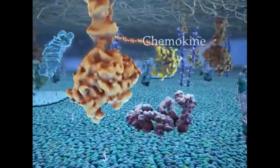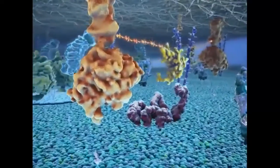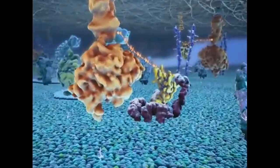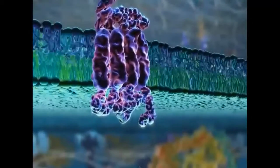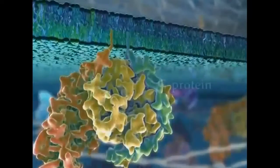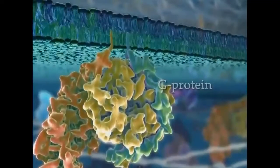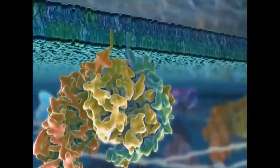At sites of inflammation, chemokines secreted by endothelial cells bind to the extracellular domains of G-protein coupled membrane receptors. This binding causes a conformational change in the cytosolic portion of the receptor, and the consequent activation of a subunit of the G-protein.